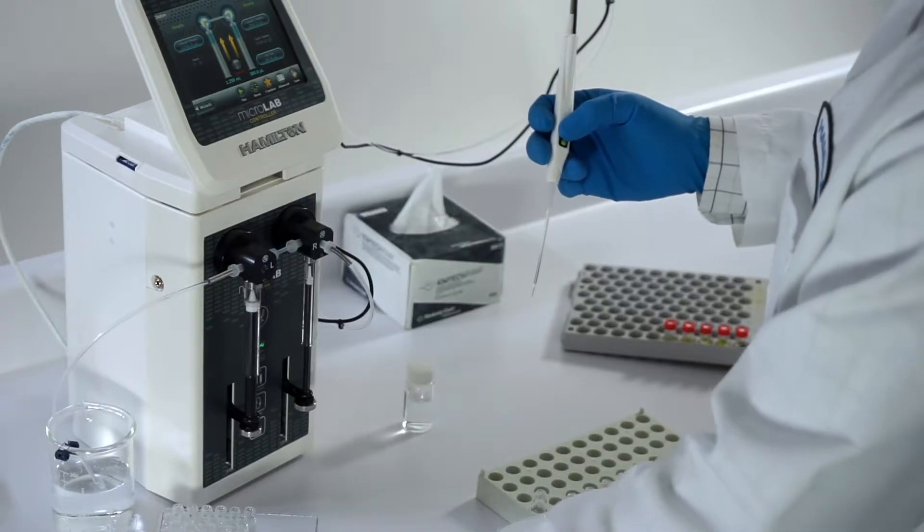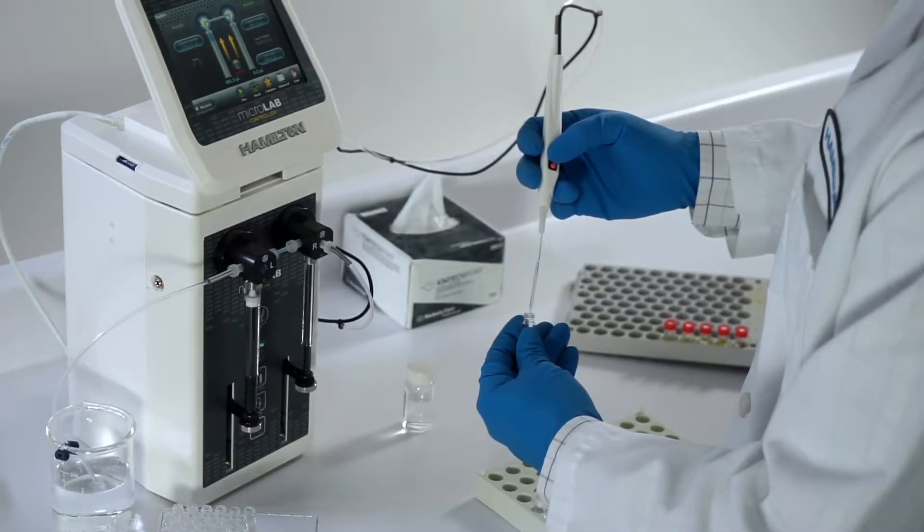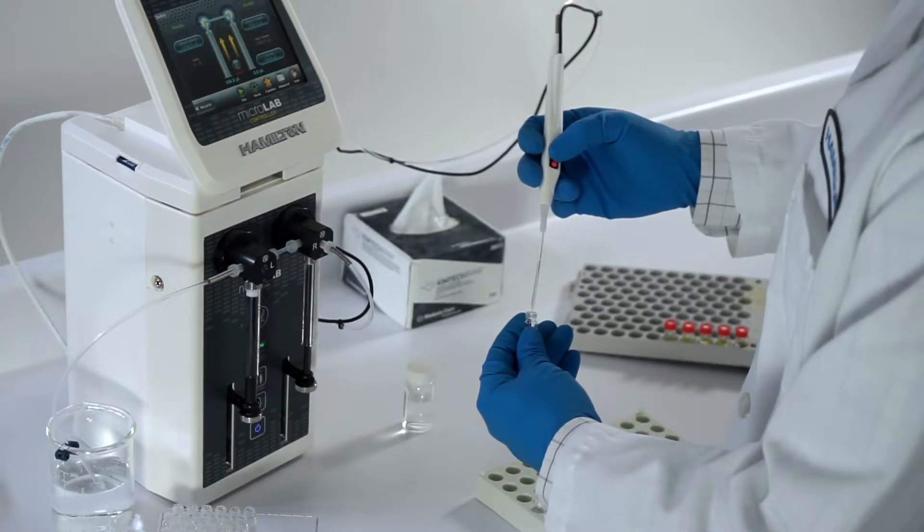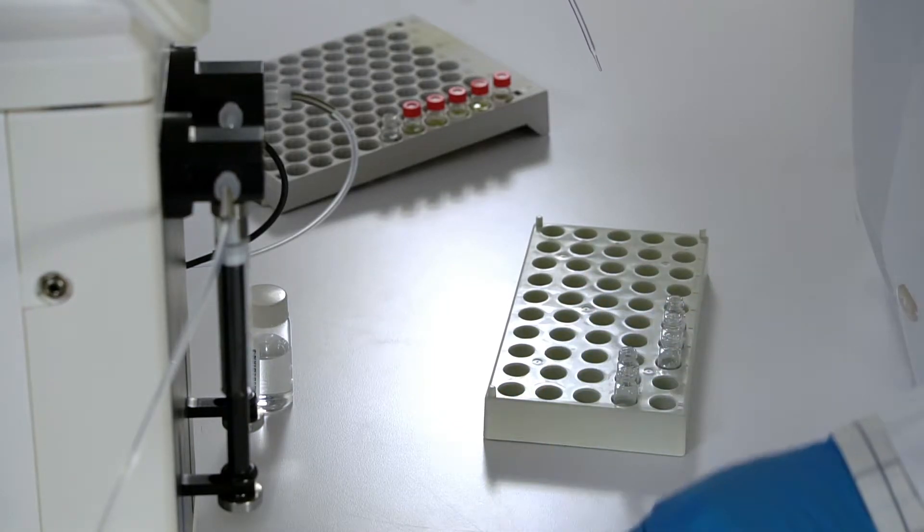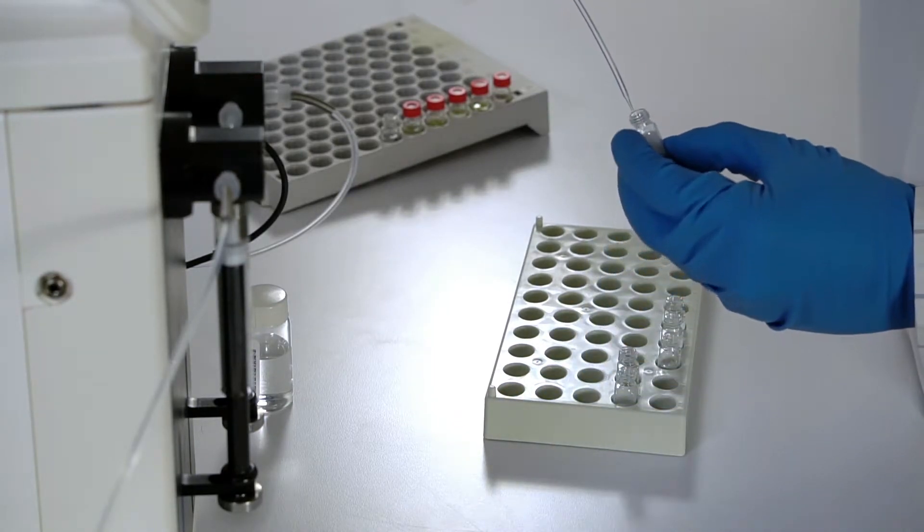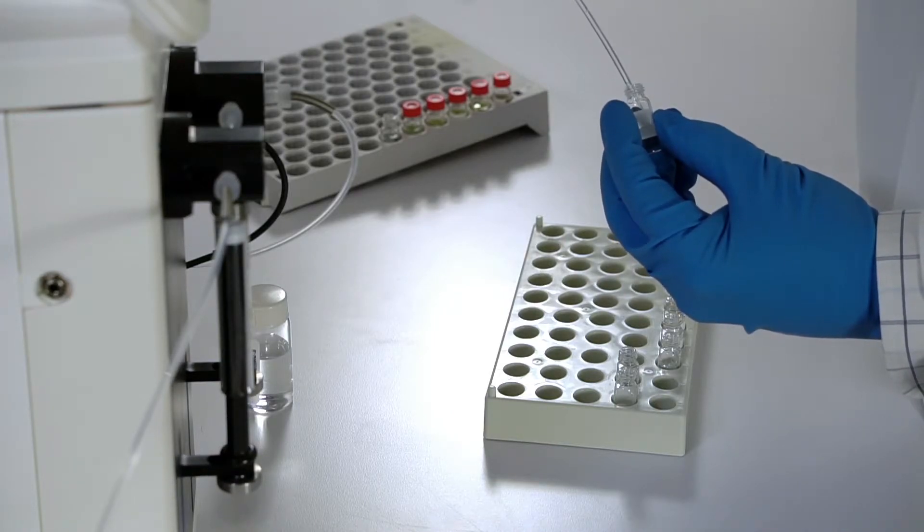The diluent flushes the sample from the tubing, ensuring an accurate dilution and preparing the probe for the next unknown sample. For applications with small dilution ratios or sensitivity to carryover, it is possible to add optional air gaps, wash volumes, or even use a disposable tip version of the hand probe.